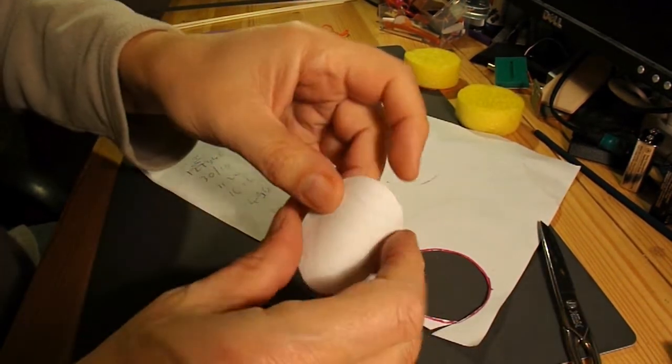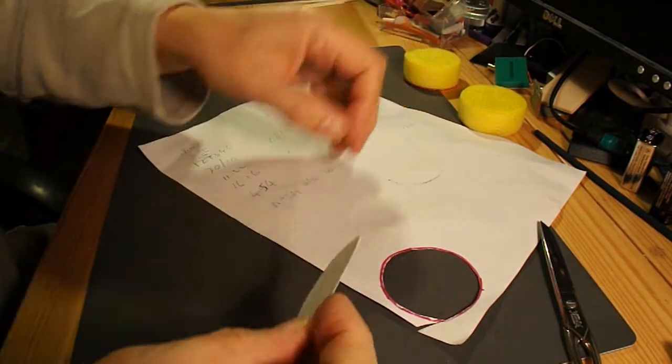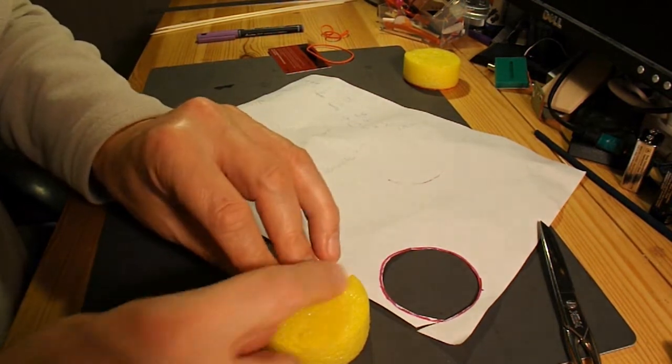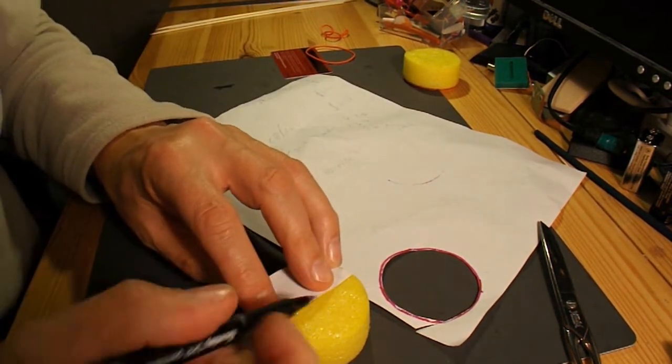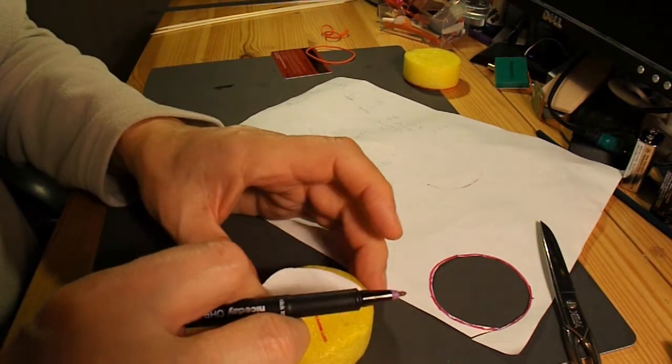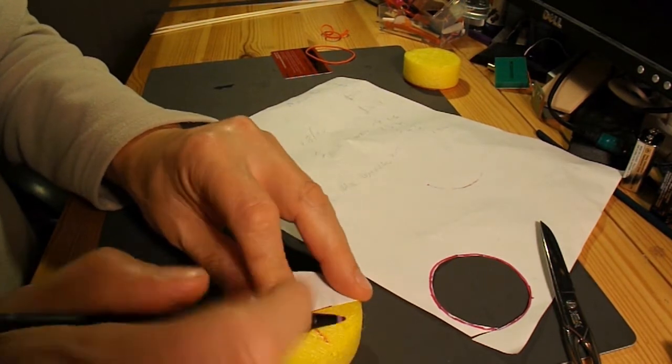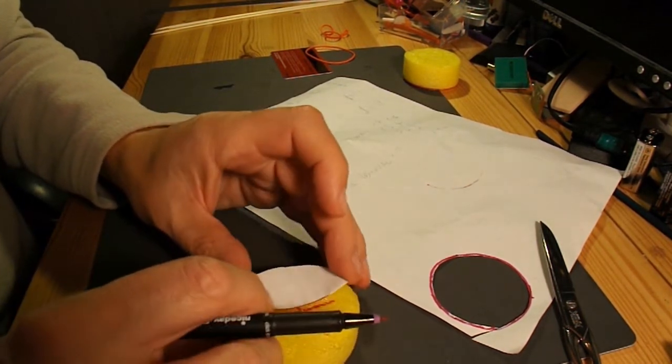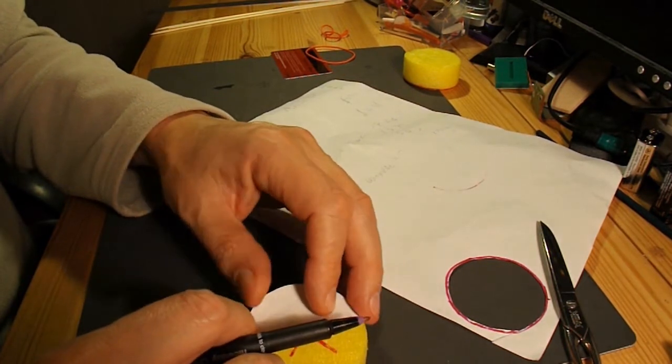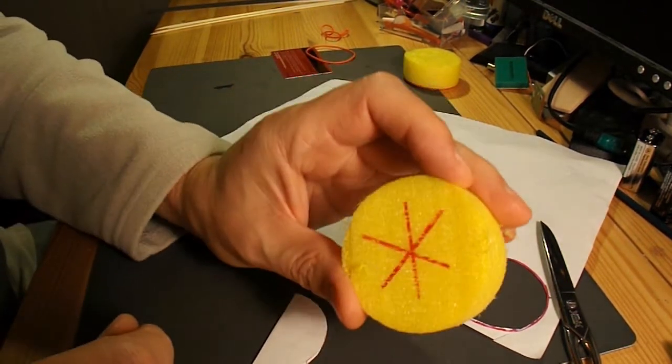Cut it out. If I fold it in half, that should give us a line across the middle. And then turn it and turn it again. And just for accuracy I'll try it a third time. So hopefully that should be the middle.